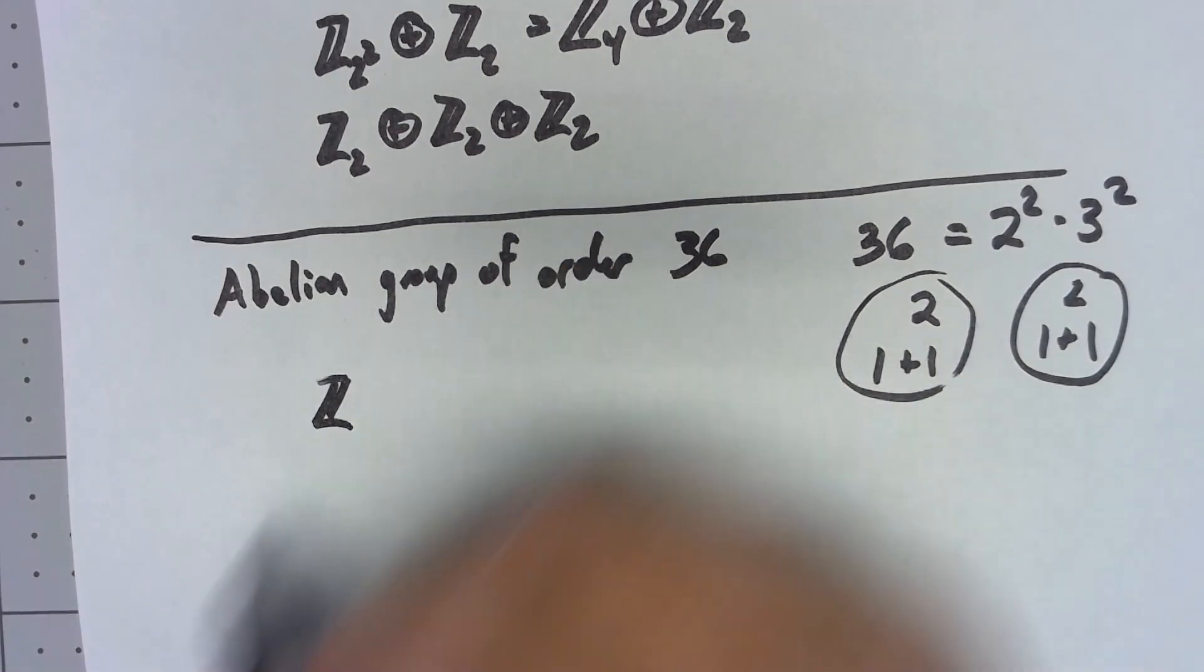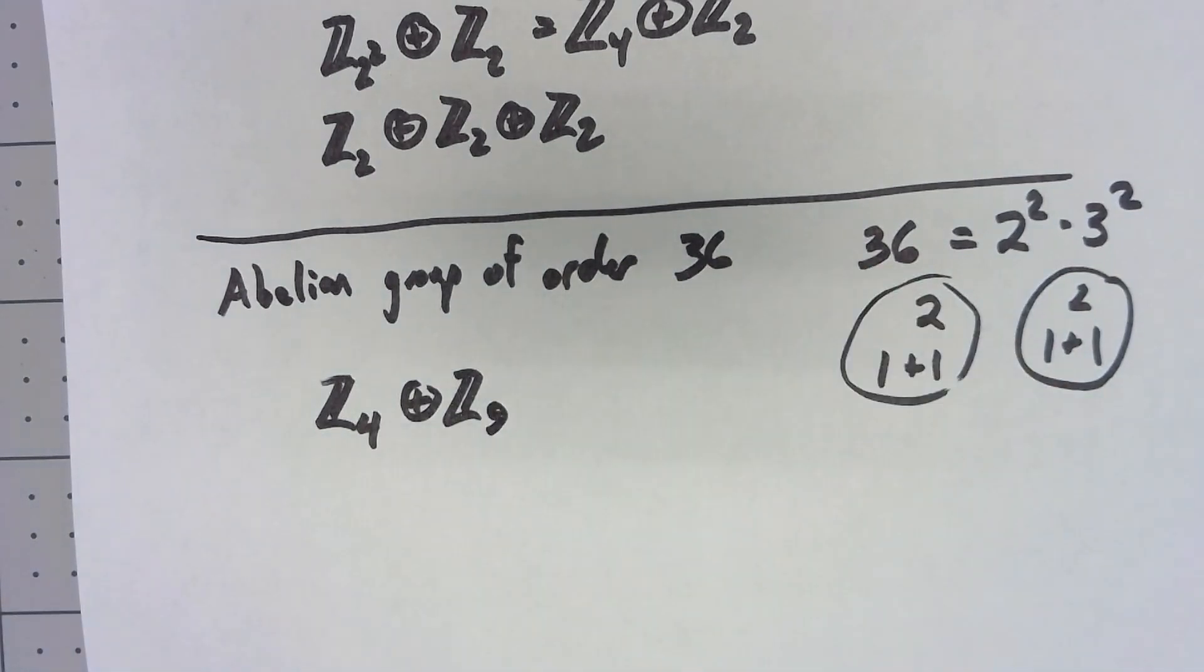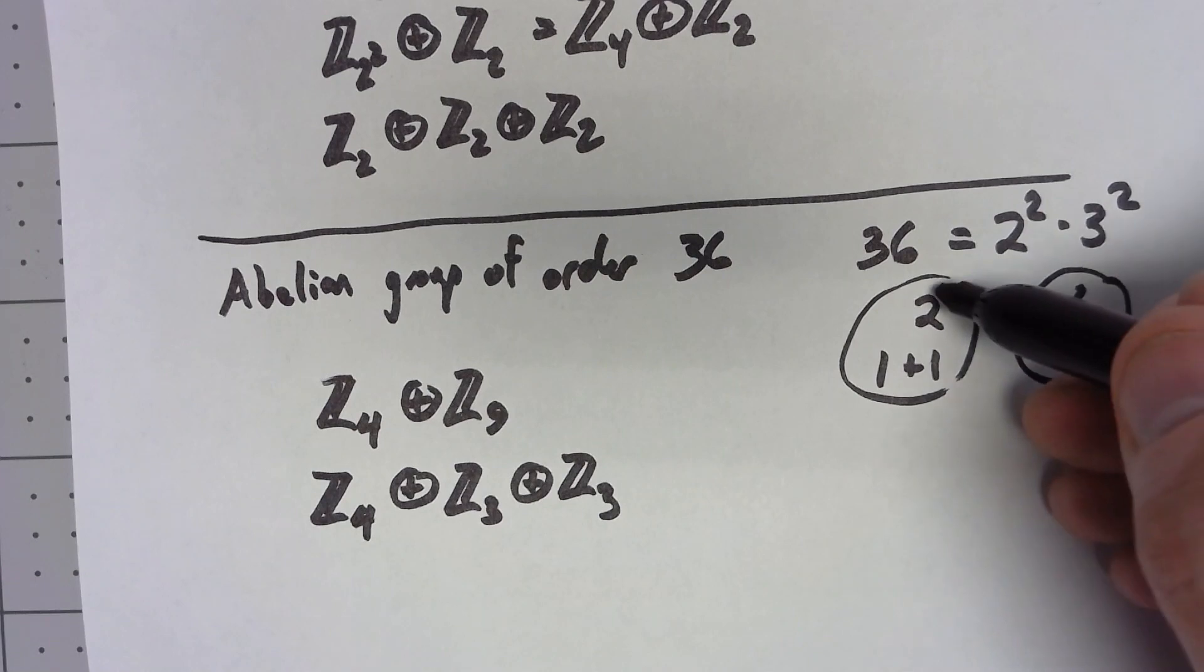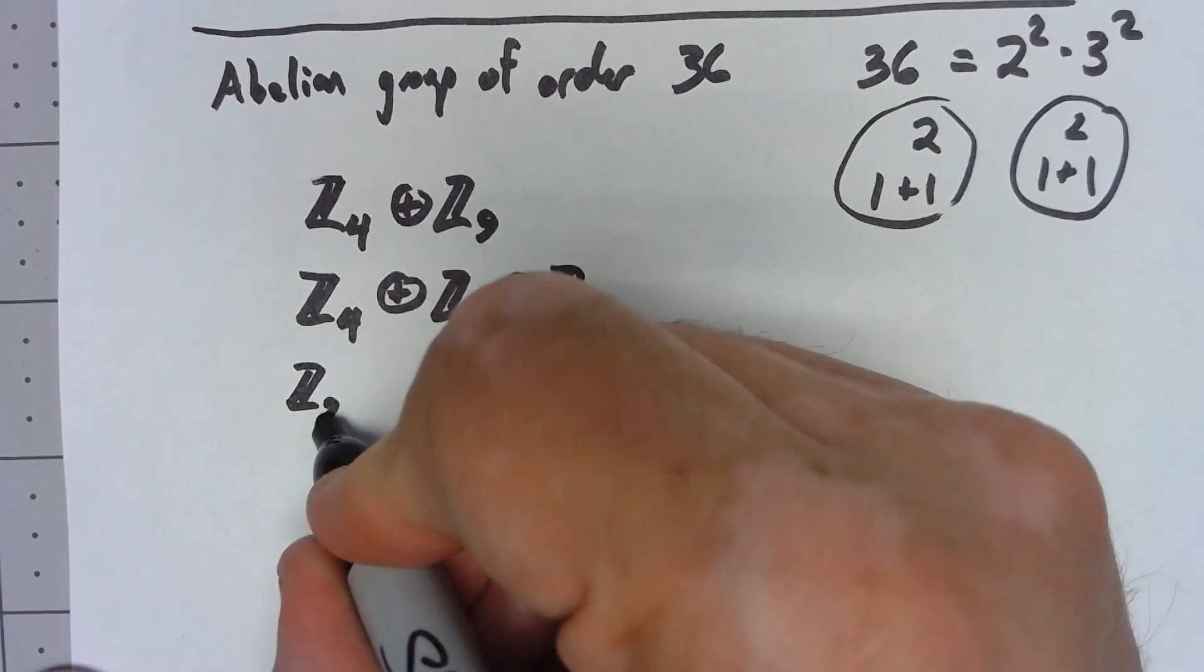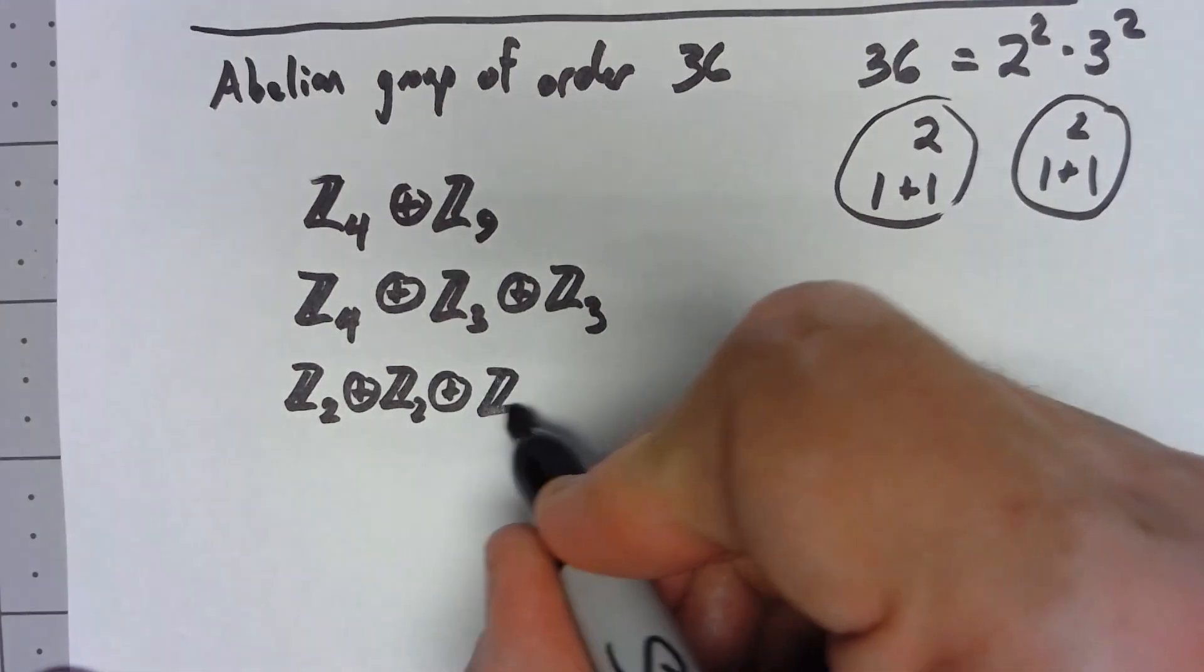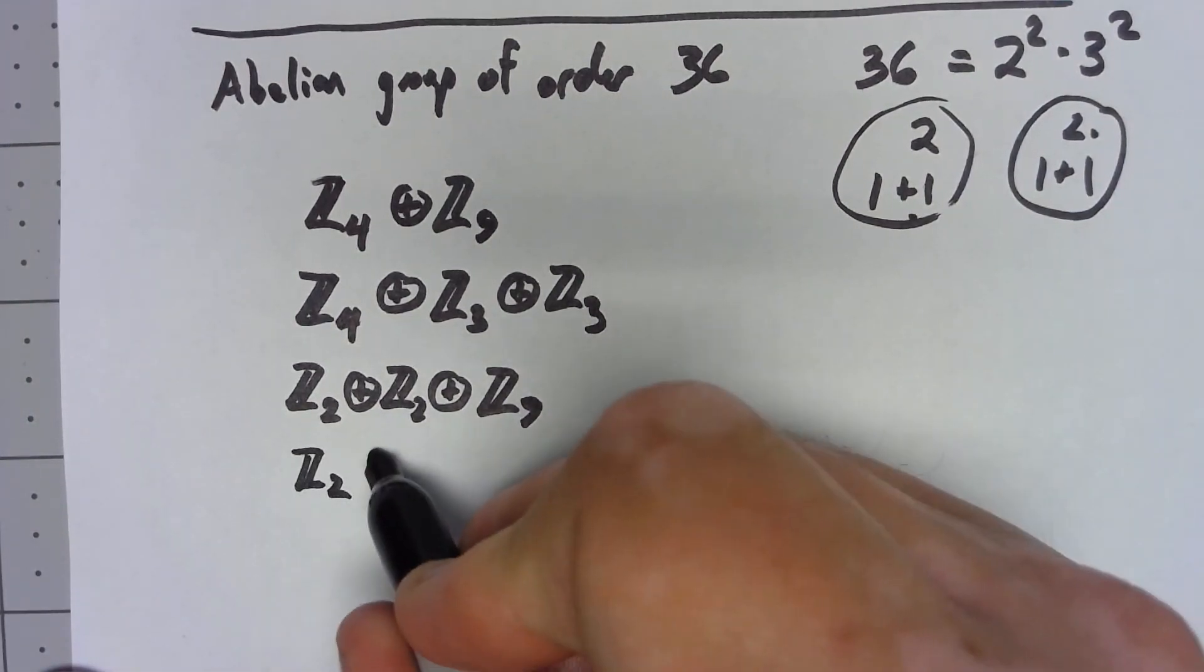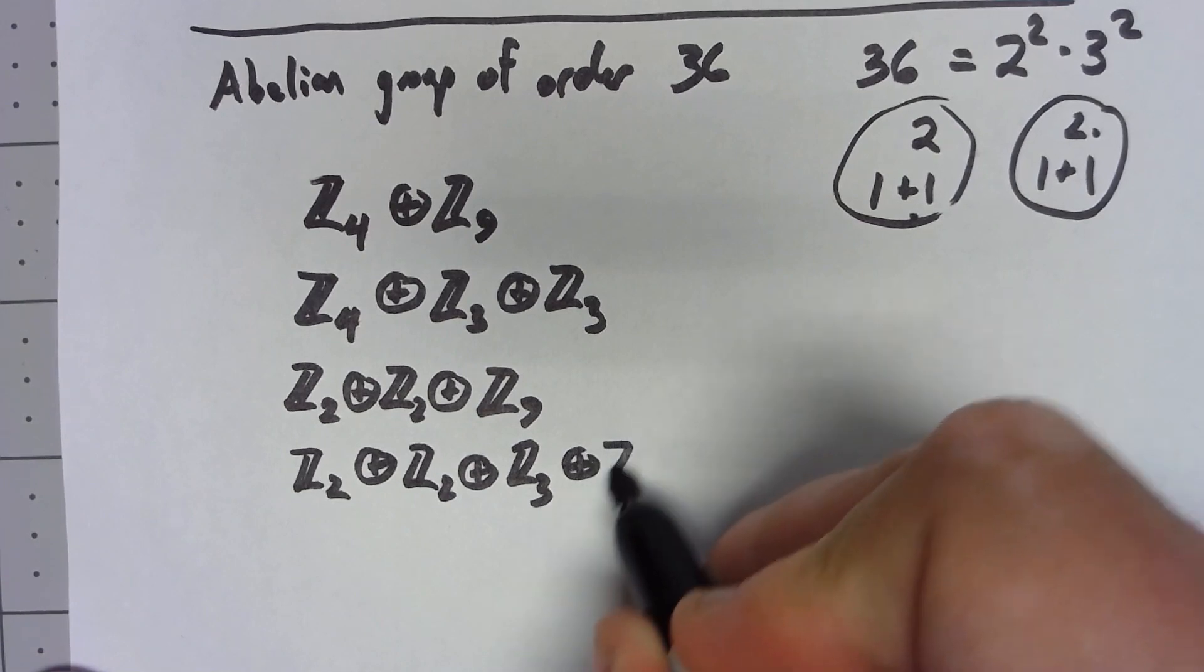I can have Z2 squared direct product Z3 direct product Z3 by taking the 2 and the 1 plus 1. I can have Z2 direct product Z2 direct product Z3 squared by taking the 1 plus 1 and the 2, or finally I could have Z2, Z2, Z3, Z3.